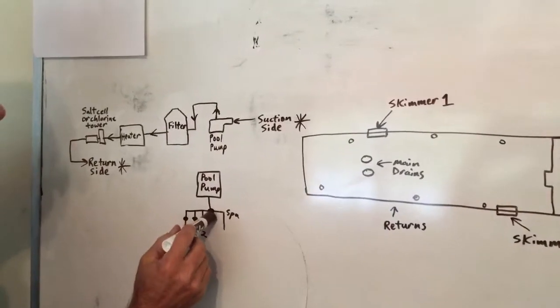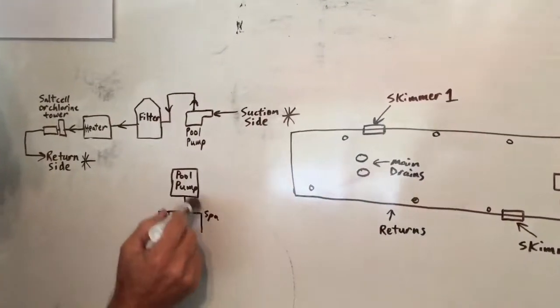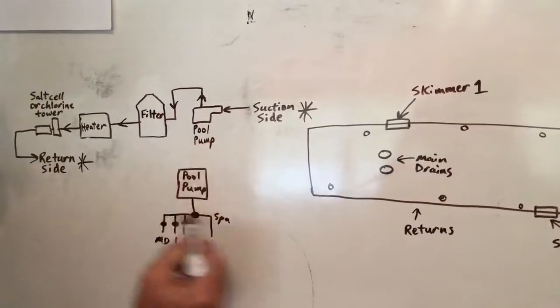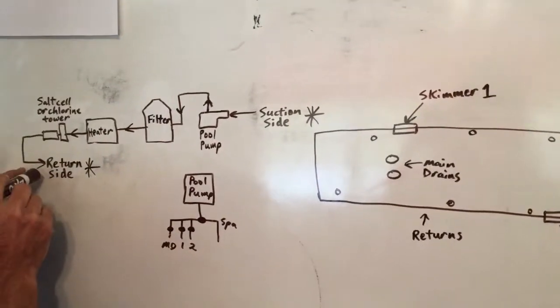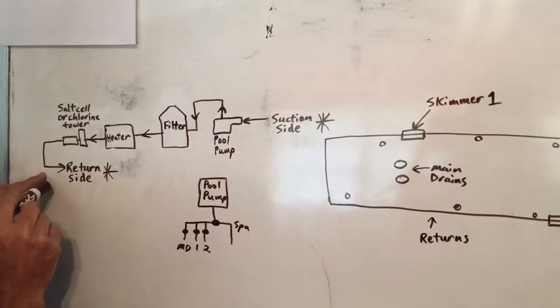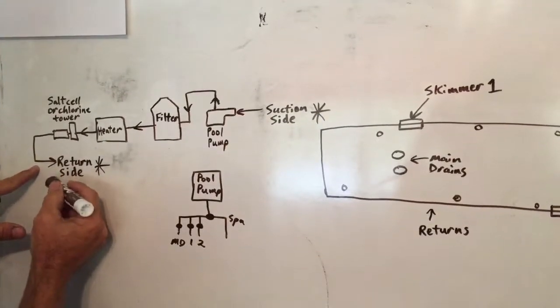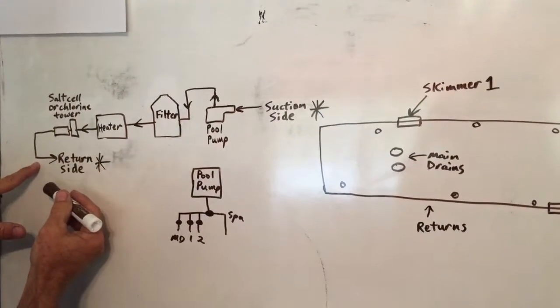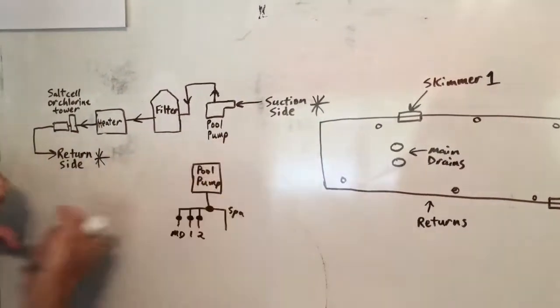Well, you're going to change this valve right here that's usually set to cut off the spa for the suction. And there's another valve over here on the return side that cuts off the spa return. Usually it just depends on how they plumbed it. And now you want to switch those valves.